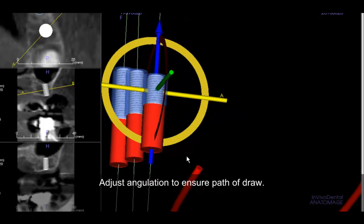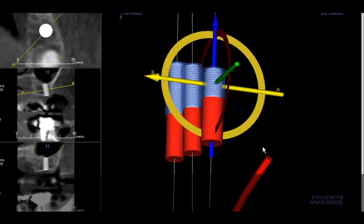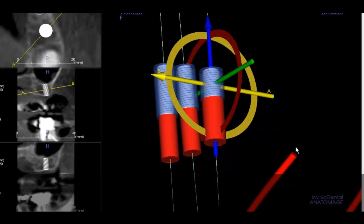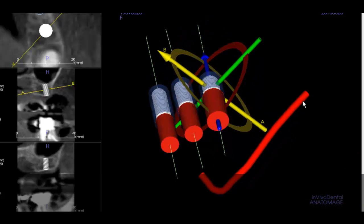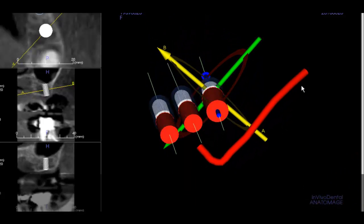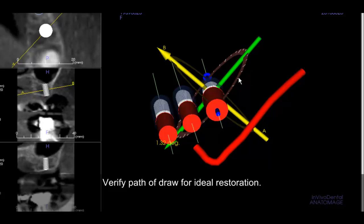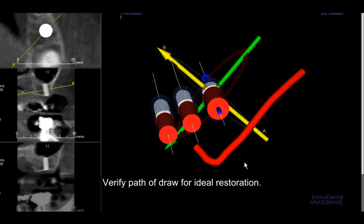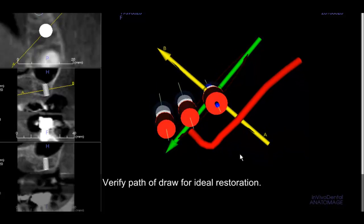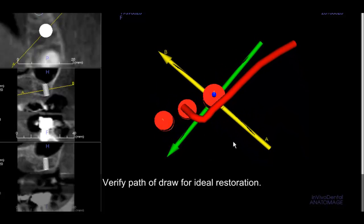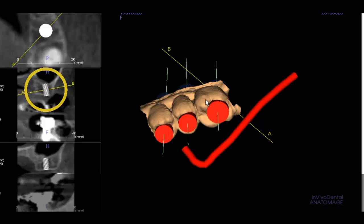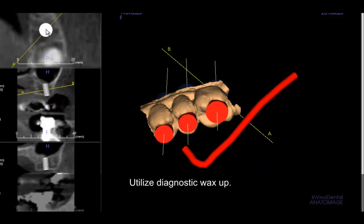Employing the surgical guide just transferred what we had done digitally into the surgical field. It made the procedure go by much more smoothly, much faster, and certainly less trauma to the patient. From a restorative standpoint, Dr. Walsh knew what he was going to get on the back end after the surgery was done. So for him, there were not the concerns and worries that there may be some issues during the surgery. He knew that everything was going to proceed smoothly — and it did.